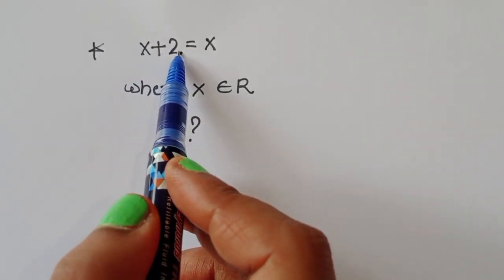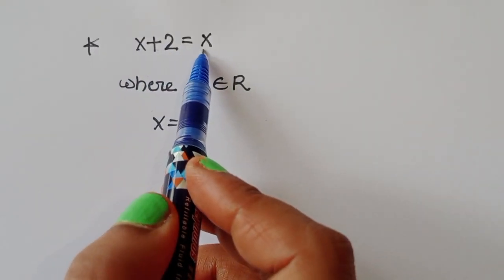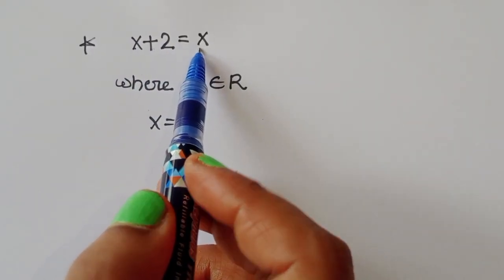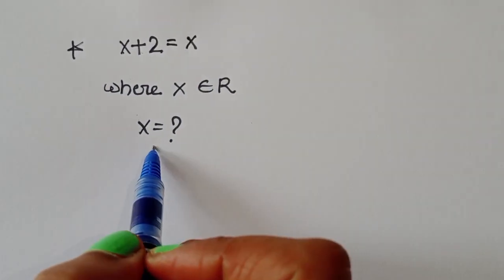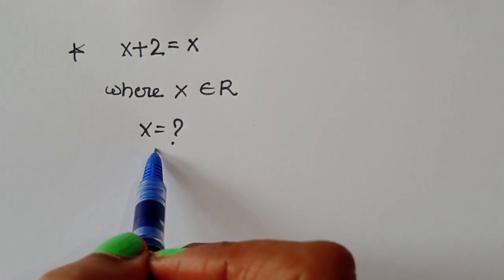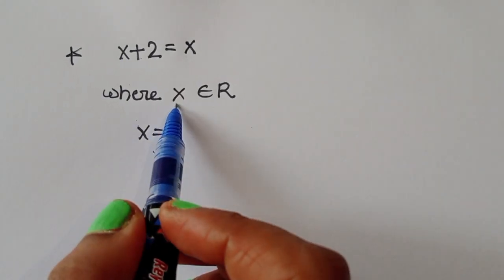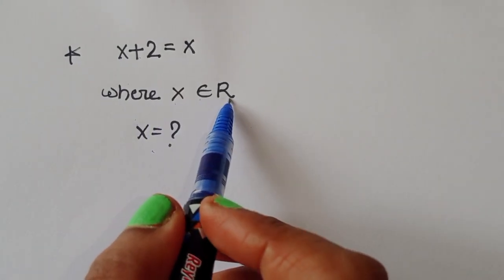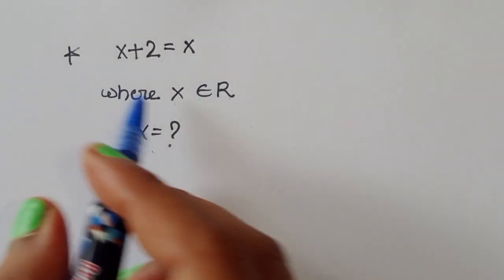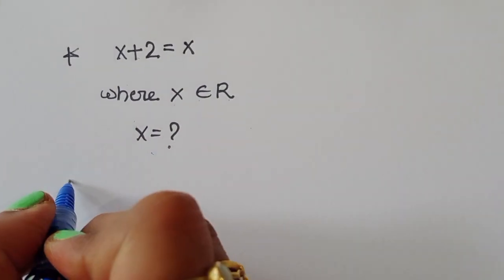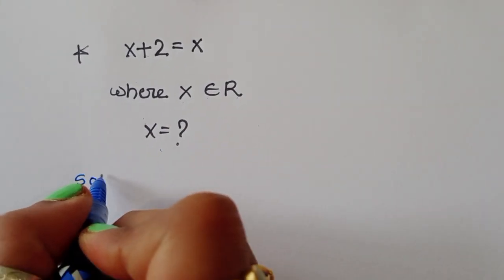Given √(x + 2) is equal to x, so we have to find out the value of x, where the condition is x belongs to real numbers. Let's see the solution — how we can find out the value of x.